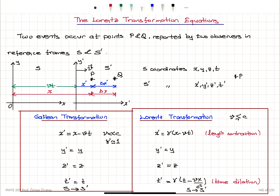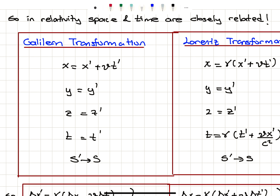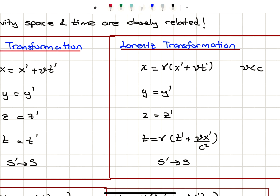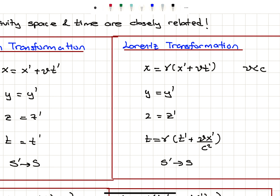The corresponding Galilean transformation equations going from S prime to S are: X equals X prime plus Vt, Y equals Y prime, Z equals Z prime, T equals T prime. When relativistically corrected, the Lorentz transformation has a gamma factor: X equals gamma times X prime plus Vt prime, Y is Y prime, Z is Z prime, and T is gamma times T prime plus X prime V over C squared.